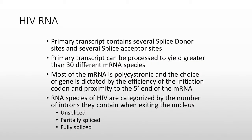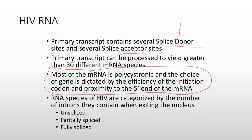There are several splice donor sites labeled with a D and splice acceptor sites labeled as an A. The mRNA can be spliced into more than 30 different mRNA species, so one HIV mRNA can become greater than 30 other mRNAs. And as noted, it can read in all three reading frames — this is called being polycystronic.